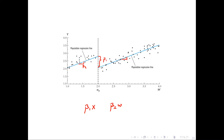The effect of the treatment is this jump in the regression line. The reason why you would use the regression line is that you would then use all the data points to fit your model. If you only used data points which were close to the cutoff value, then you would have only a few data points to base your analysis on.